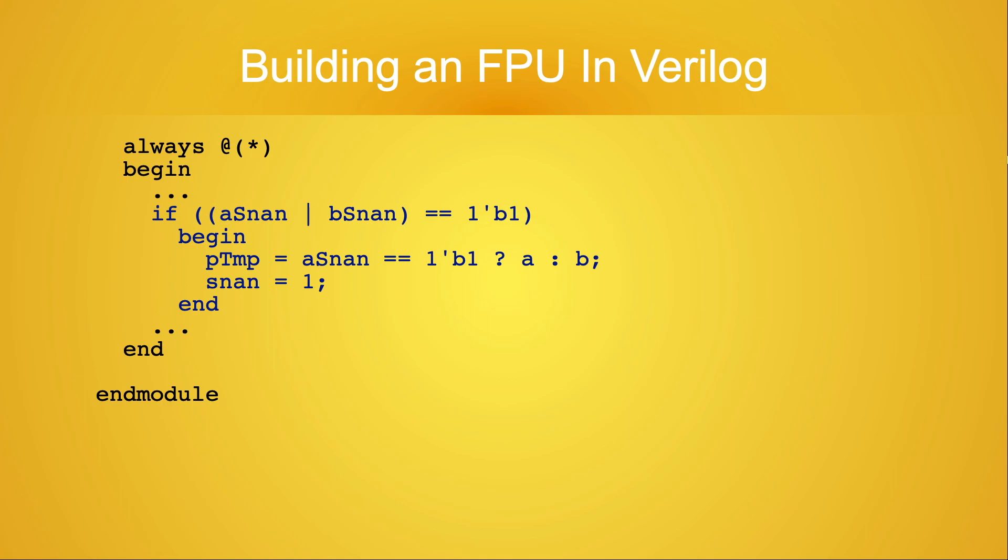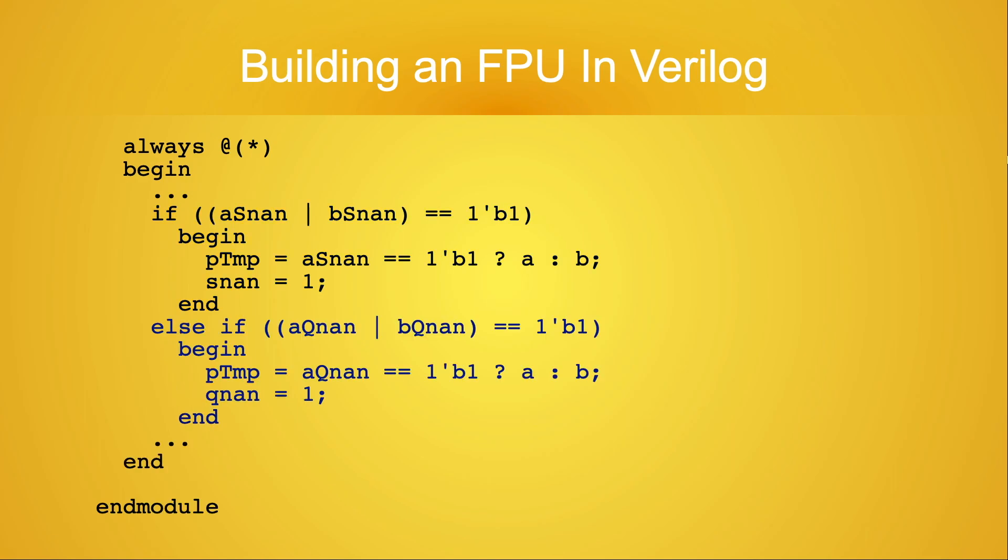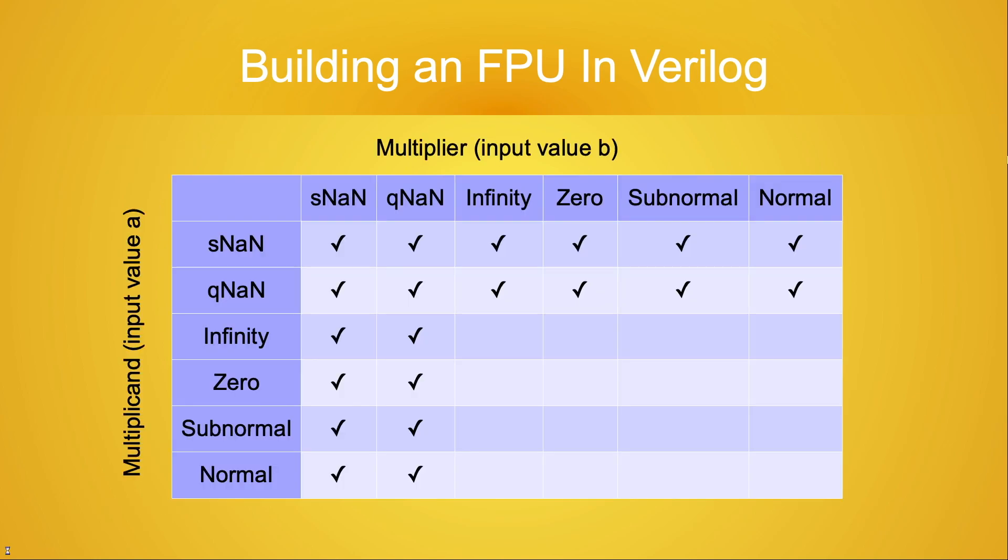This first if statement tests to see if either of the input operands is a signaling NaN. If one or both of them is a signaling NaN, we set ptemp to the value of the signaling NaN, and set the sNaN output flag for the product to be true. The code for handling quiet NANs is virtually the same. These two if clauses complete the first two full rows and columns of our checklist.